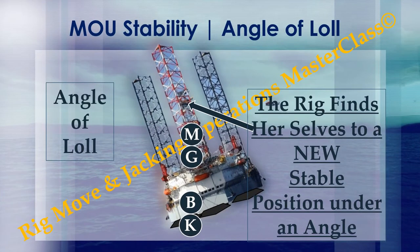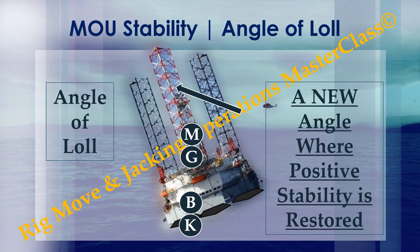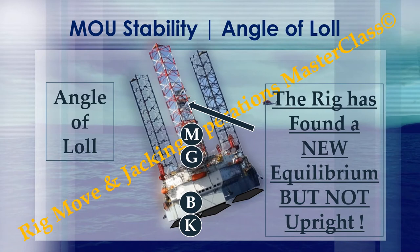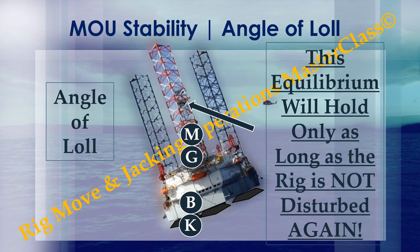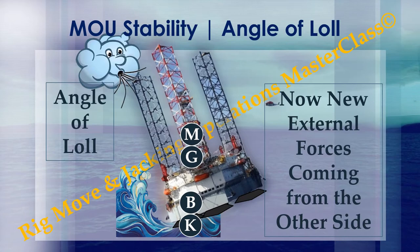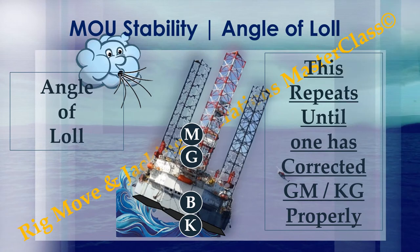Due to the disturbance, the rig finds herself in a new stable position under an angle — a new angle where positive stability is restored. The rig has found a new equilibrium, but not upright. This new equilibrium will hold only as long as the rig is not disturbed again. New external forces coming from the other side bring the rig into another stable angle. This cycle repeats until one has corrected GM and KG properly.